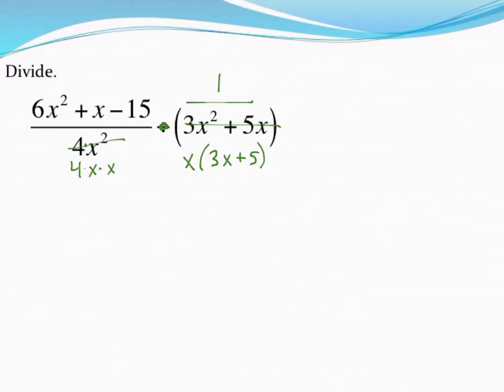Last up is this trinomial, the 6x squared plus x minus 15. Well, because there's not a 1 in front and because there's no greatest common factor, I'm going to need to use the box method to factor this. Again, if you need a review of that, go back and watch a video for this. Just for time, I'm going to tell you what this factors into.